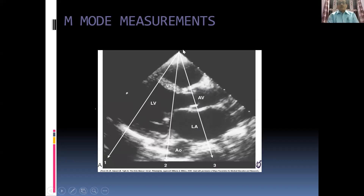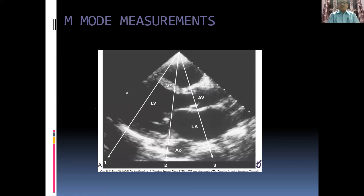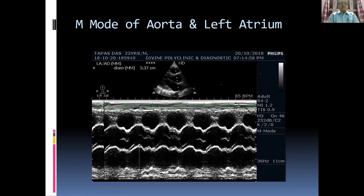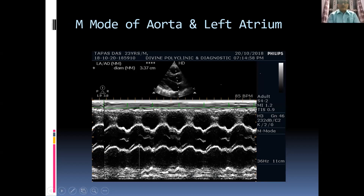Similarly, if you place the cursor across the tips of the mitral valve, you get a measurement of the mitral valve, and if you place it beyond that, you get measurements of the left ventricle. For the aorta and left atrium in M-mode, measurements are made from leading edge to leading edge. The left atrium is measured in systole from leading edge to leading edge.